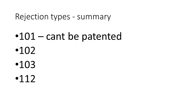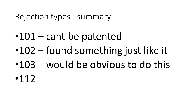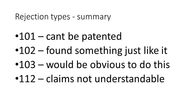So let's recap what the rejections are. A 101 rejection means it can't be patented — the subject matter is ineligible. 102 basically means something just like it or very similar already exists. 103 means it would be obvious to do this based on one or more other things that are out there, even though they didn't find exactly what you have. And 112 means claims are not understandable or definable — and because if claims aren't understandable, they're really not enforceable, so you really want to avoid that situation.